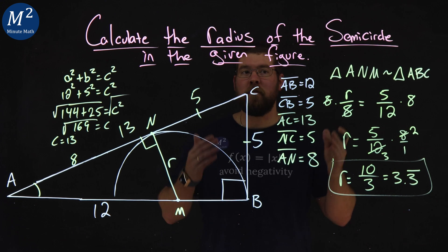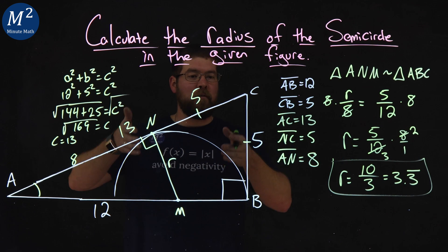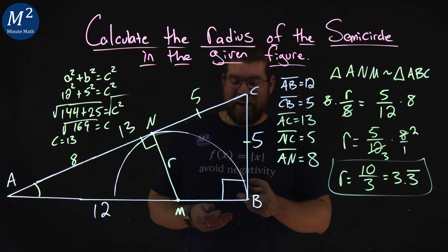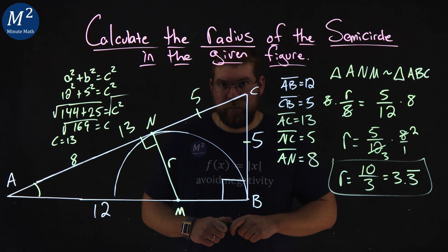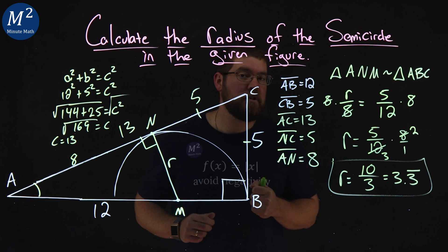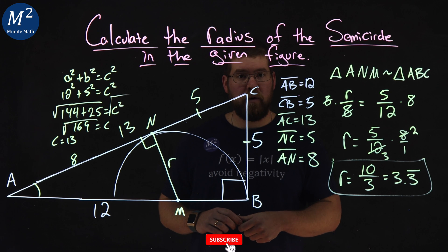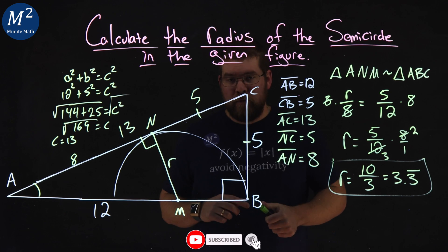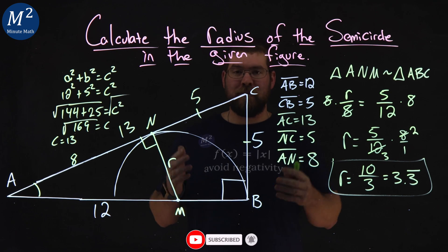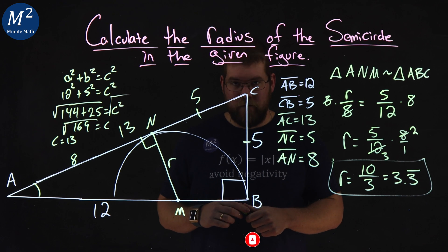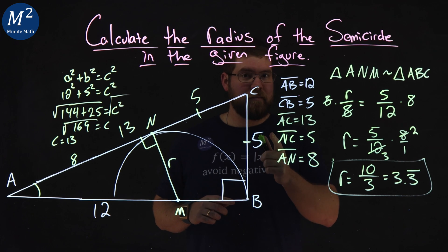And there we got it. We found the radius of our semicircle from the given figure, and we got it to be 10 thirds. If you have another idea for a video that we should do, let me know down in the comment section below. And please like this video and subscribe to our YouTube channel. This helps us make more of these fun math videos for you and for everyone else. So, as always, thanks for watching.